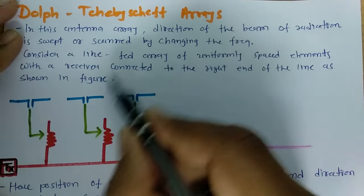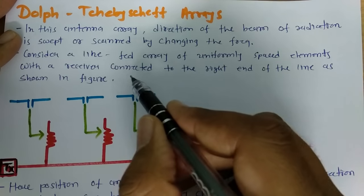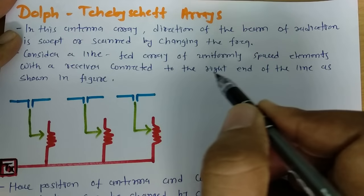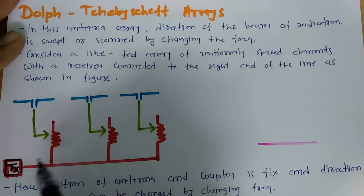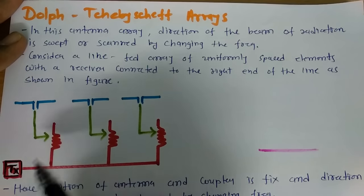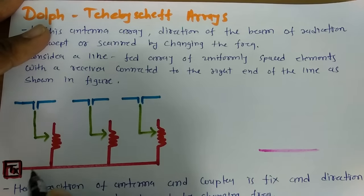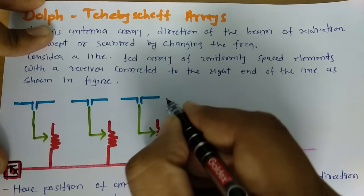Consider a line feed array of uniformly spaced elements with a receiver or a transmitter connected to the right end of the line as shown in figure. Here we have transmitter, we can have a receiver even that is connected with these elements where these are dipoles.